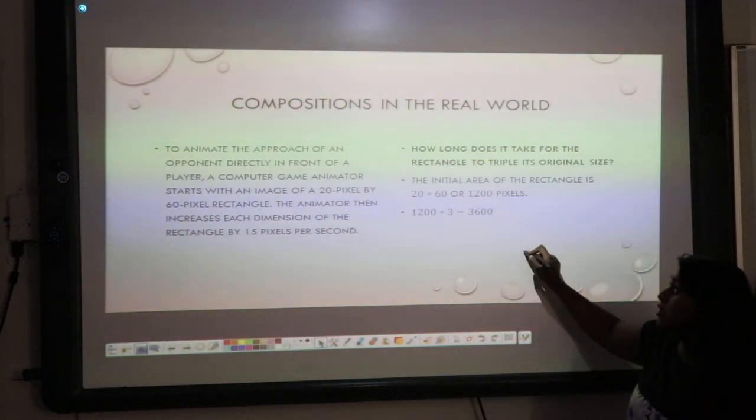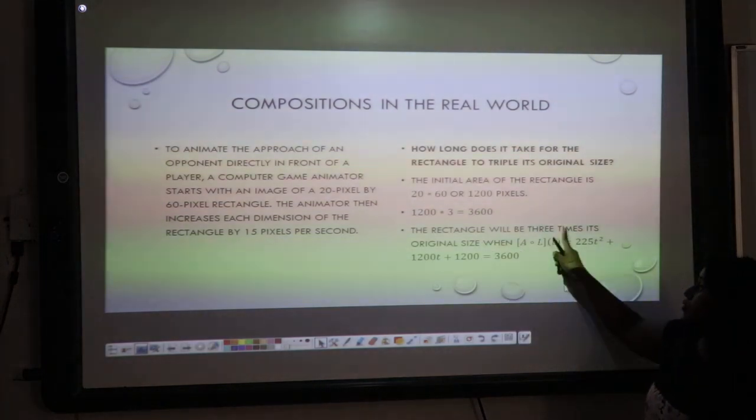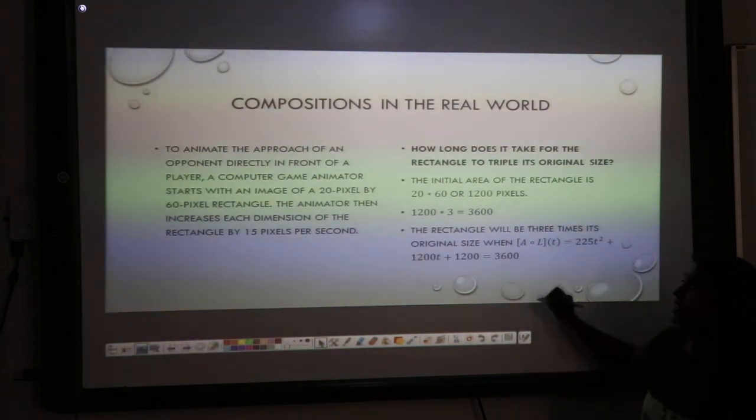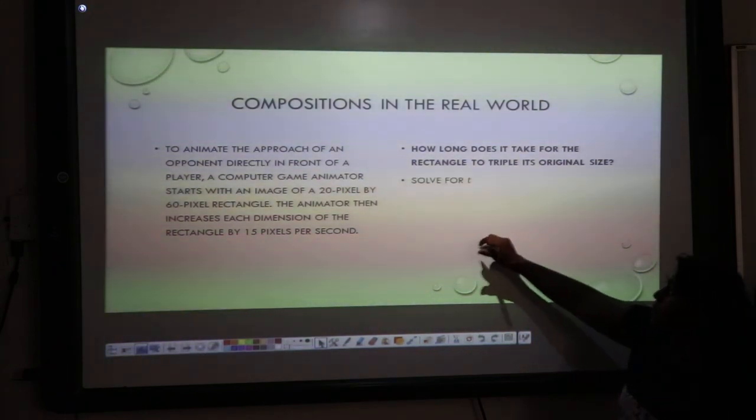My rectangle will be 3 times the initial size when my composite function, my area in terms of T, is equivalent to 3600. So, I solve for T. I plug it into a calculator.